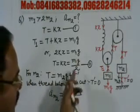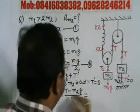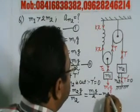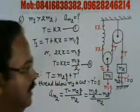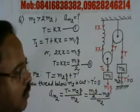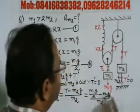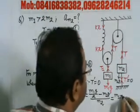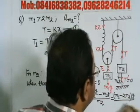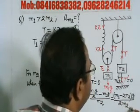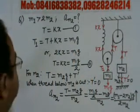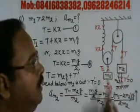The value of T is m1g divided by 2. So the acceleration of m2 equals (m1g/2 minus m2g) divided by m2. This simplifies to (m1/(2m2) minus 1) times g. This is the acceleration of m2 in the upward direction.